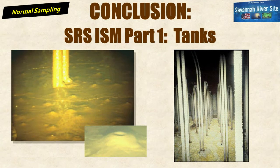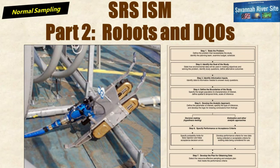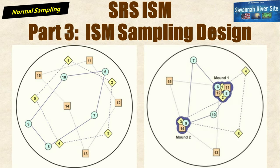This wraps up our part one presentation on liquid waste tanks at SRS. The final ISM sampling design incorporated many aspects of the tank features as we'll see in parts two and three of this series. Thanks for watching part one of the Normal Sampling series on incremental sampling for radioactive wastes. Be sure to watch part two, where we present the robotic approach to tank sampling along with the data quality objectives, and don't miss part three, where we explain the ISM sampling design to achieve tank operational closure. See you next time on Normal Sampling.